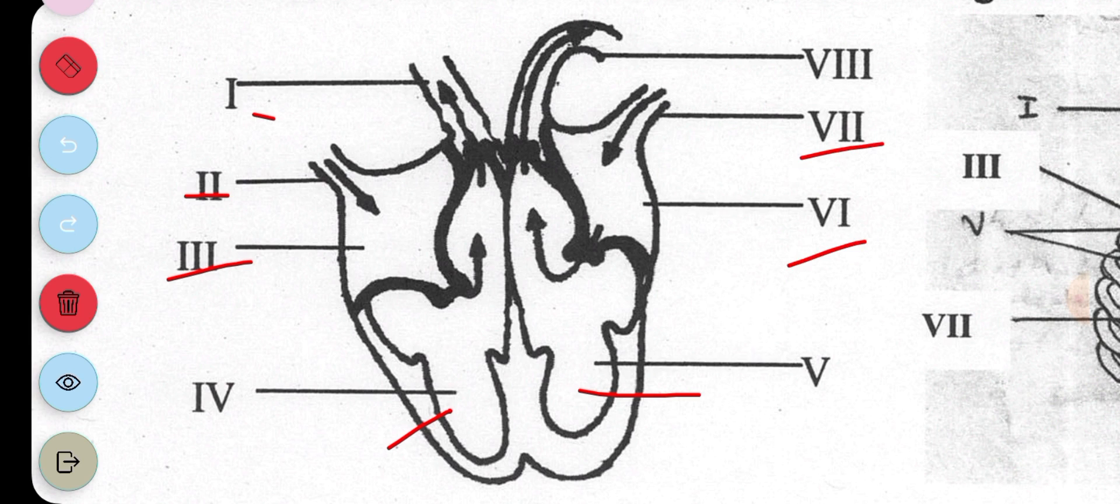Part VII is the pulmonary vein, and part VIII is the aorta, which is the last channel through which blood passes to all parts of the body. So that's it for the human mammalian heart.